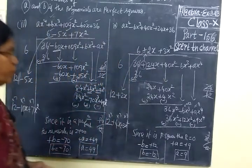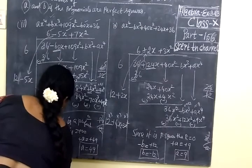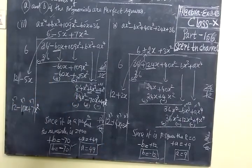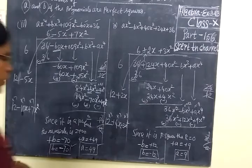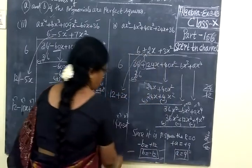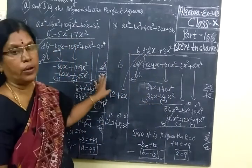The answer is b equal to minus 12. Minus minus plus. So the answer is b equal to minus 12. Anyway, we check it again. For the third one, the answer is: a equal to 49, b equal to minus 70 — this is minus 70, so both are correct. Then for the fourth one, a equal to 9, b equal to minus 12. So both are correct. So binding the square root over.